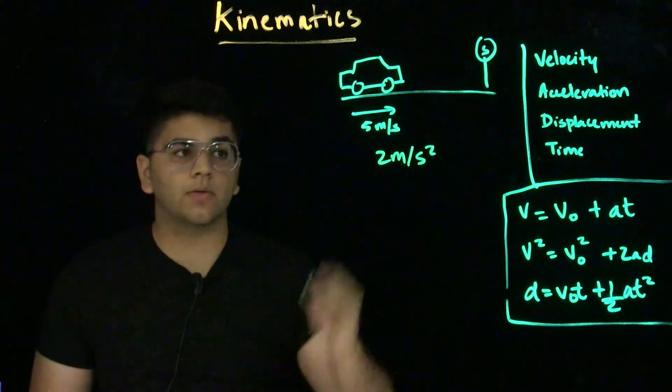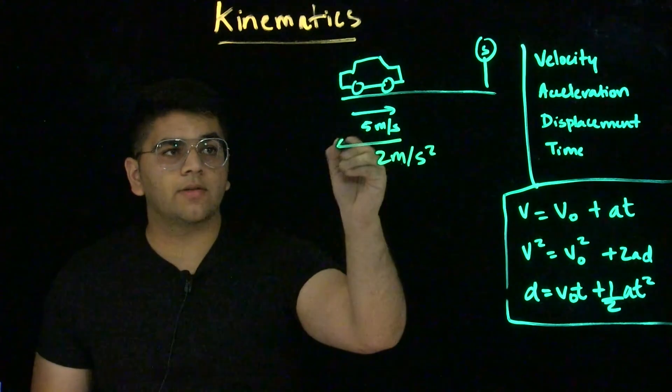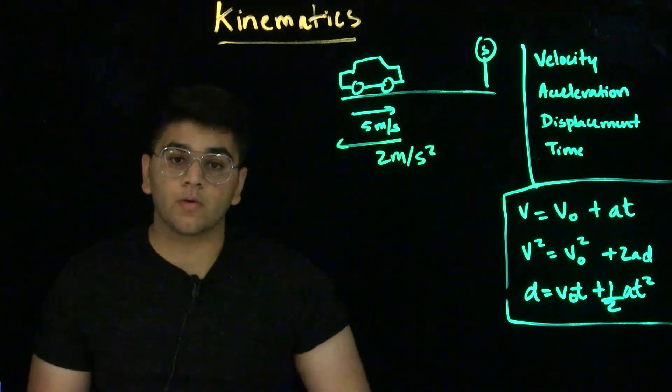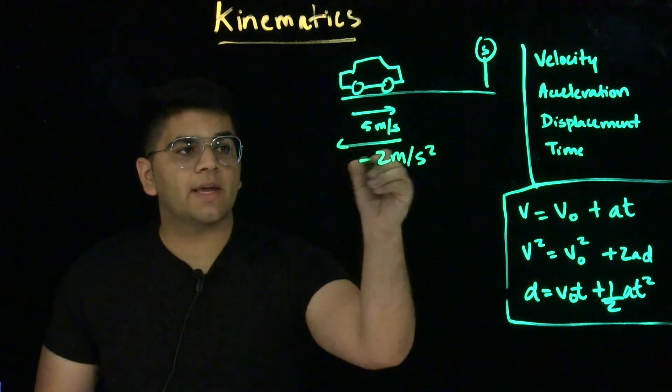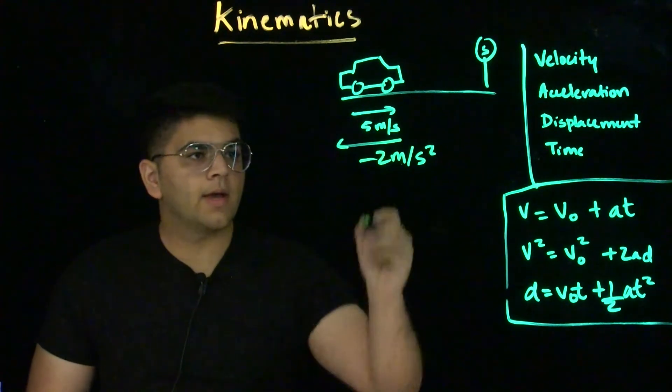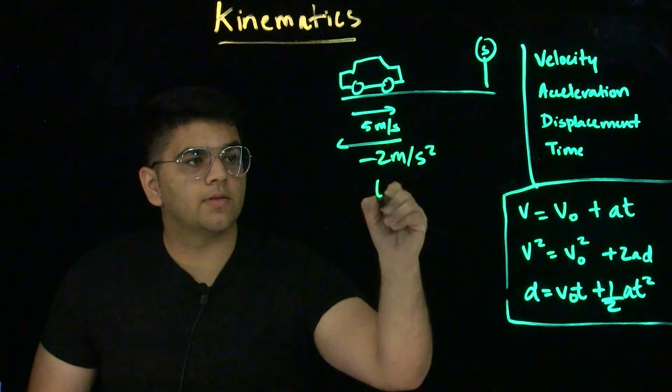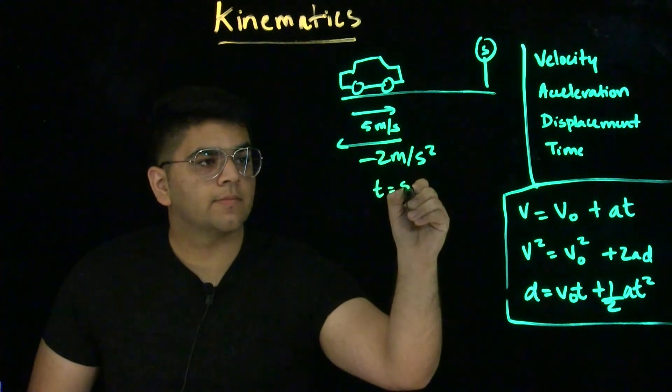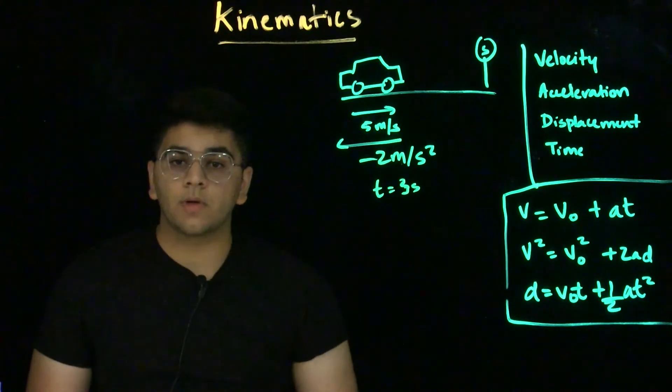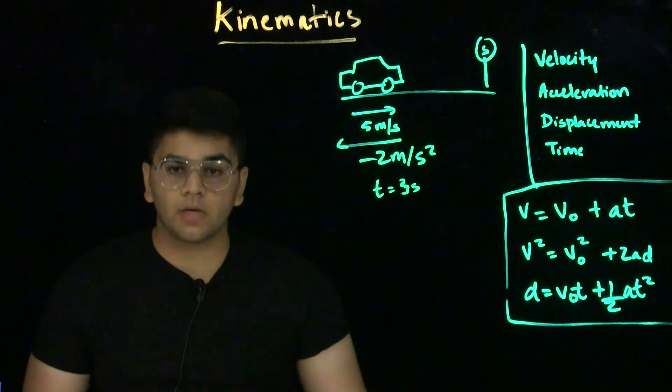Now, since the car is slowing down, the direction will be opposite to what it was moving in. Whenever we're considering the opposite direction, we use a negative sign to denote that in the magnitude. And let's say the car stops in 3 seconds. And I want to know the displacement of the car while it is coming to a stop.